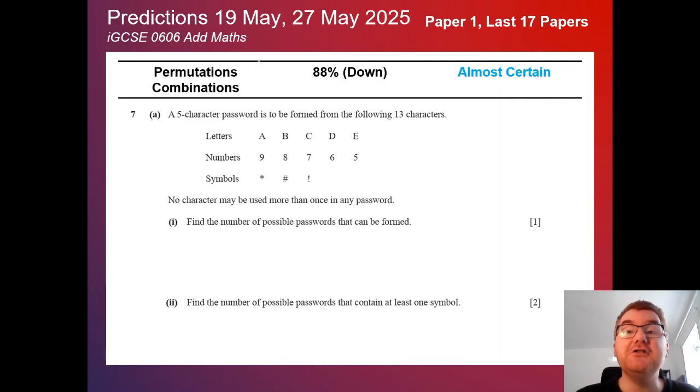So first of all, we have permutations and combinations on Paper 1, a little bit down at 88%, but still in the almost certain category here. This is a very typical kind of question. It could be a password, it could be a word, it could be people in a row, that kind of context. So making sure you're really up to date with this. And definitely one of the more difficult topics. I did do a video on permutation combinations for A-level Paper 5, which is very similar. You can check that out above.